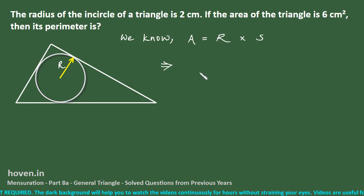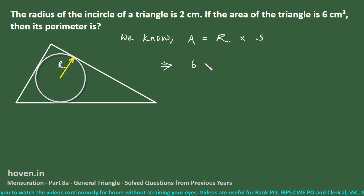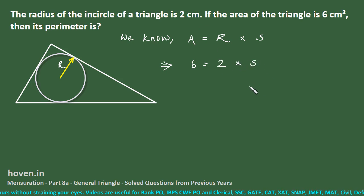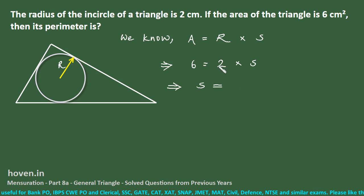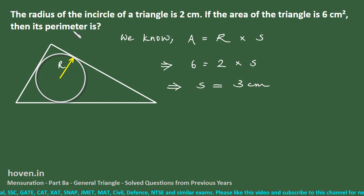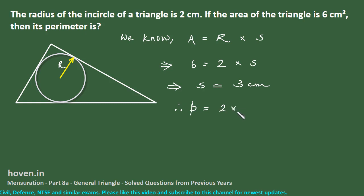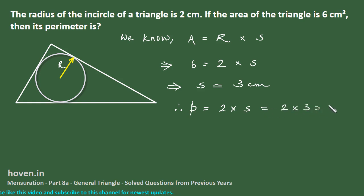Putting area equal to 6 and in-radius equal to 2, we get: 6 equals 2 multiplied by semi-perimeter. This implies semi-perimeter equals 6 divided by 2, which is 3 centimeters. Since we need the full perimeter, perimeter P equals 2 times the semi-perimeter, which is 2 into 3 equals 6 centimeters. Let us move to the next question.